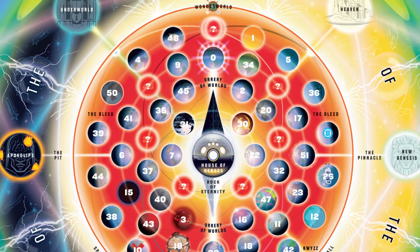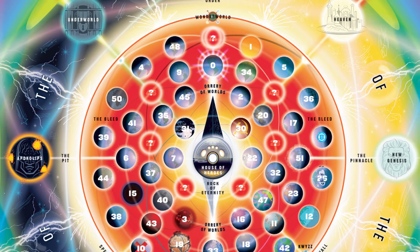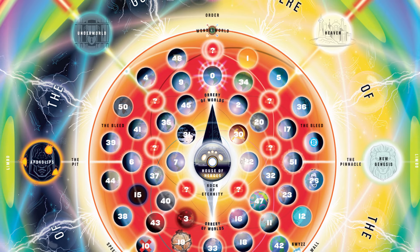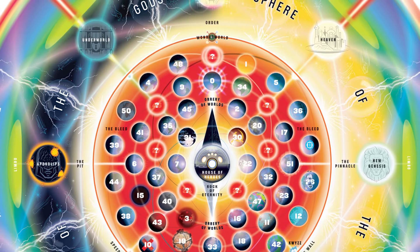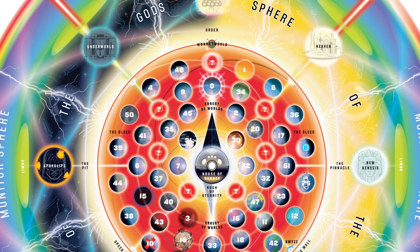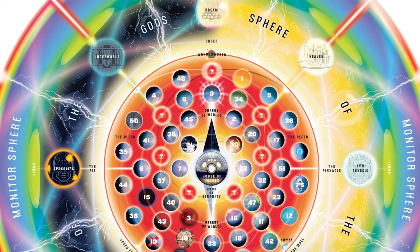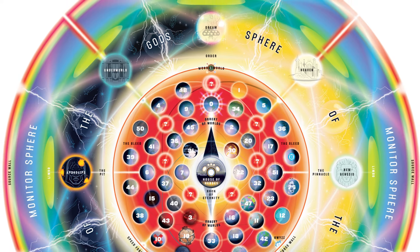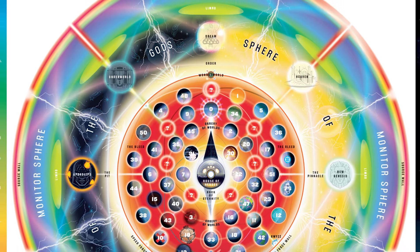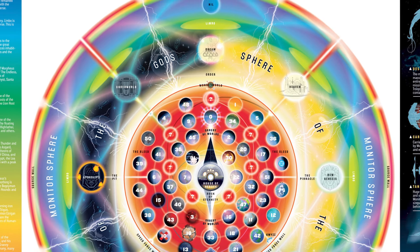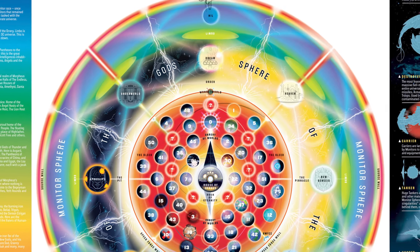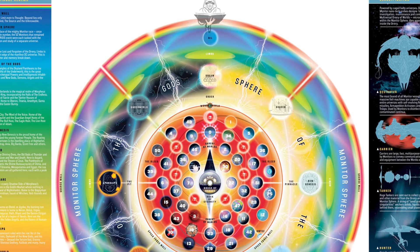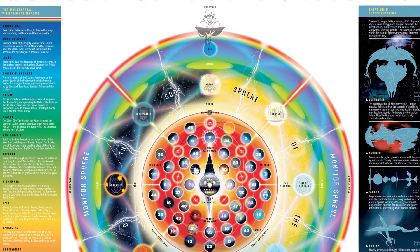To give you guys a brief rundown, it basically has a variety of realms starting all the way down in the physical matter of existence with the separate worlds that exist in the Orrery of Worlds, then it goes to the Bleed, then you have the Speed Force Wall, then you have the God Sphere and each individual realm in it, then you hit Limbo, then the Monitor Sphere with Nil, and then you hit the Source Wall, with the Overvoid being beyond.